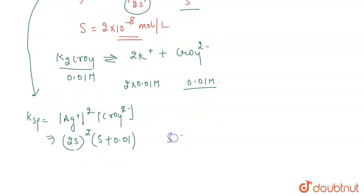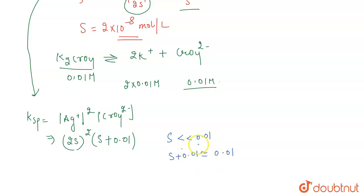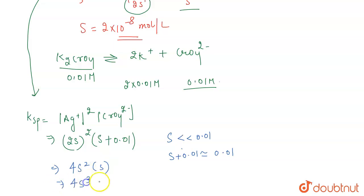The value of s is very small in comparison to 0.01, so s + 0.01 is approximated as 0.01, since s is negligible and this value remains almost unaffected. Therefore, Ksp becomes 4s² × 0.01.